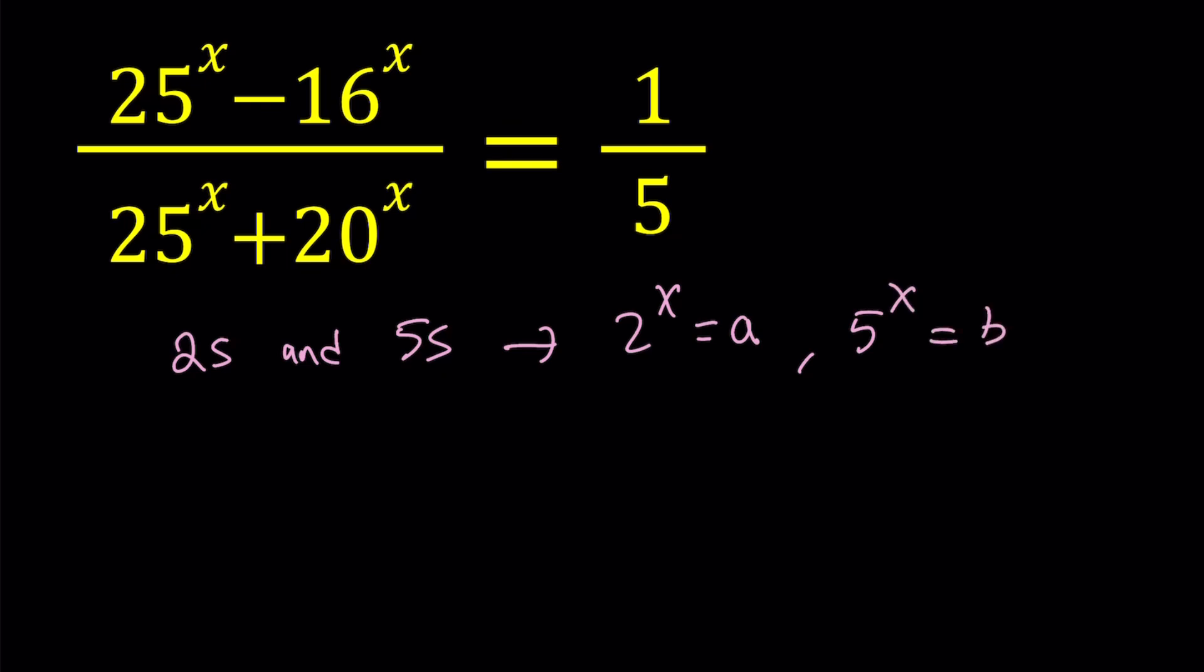From here, 25 to the power x can be written as 5 to the power x squared because 5 squared is 25, and you can easily interchange those exponents. So that becomes b squared. 16 to the power x can be written as 2 to the power x to the 4th power because 2 to the 4th is 16, and this can be written as a to the 4th power.